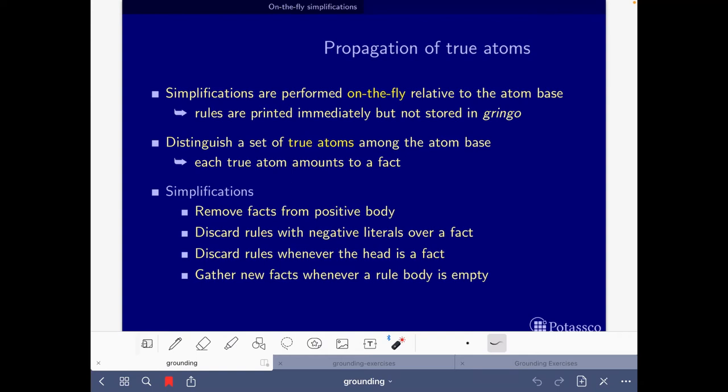And then we are also going to be gathering new facts whenever a rule body is empty. So then along the way, we are going to keep two sets, the set F of true atoms and the set D of possible atoms.